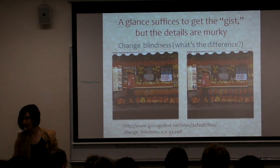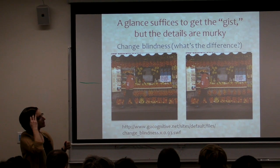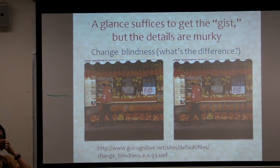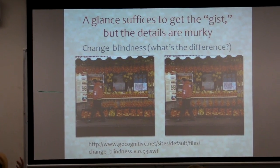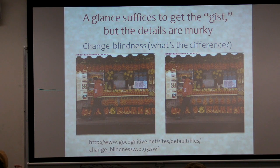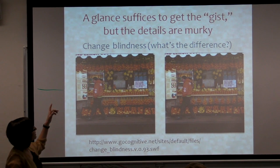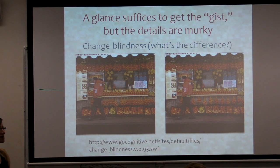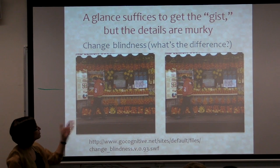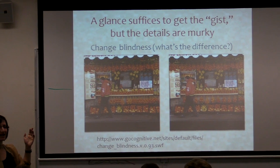A similar kind of conclusion comes from looking at scene perception. A single very short glance suffices to get the gist of a scene. But the details it turns out are murky, and if you prod someone experimentally you can find out that those details are murky. One way that people show this is the phenomenon known as change blindness, which is essentially the same as this kid's puzzle of what's the difference between these two images.